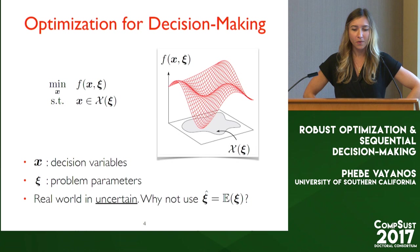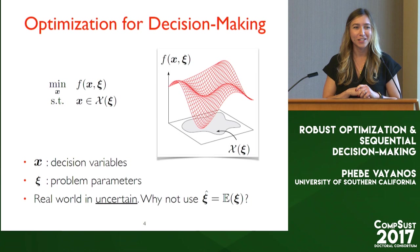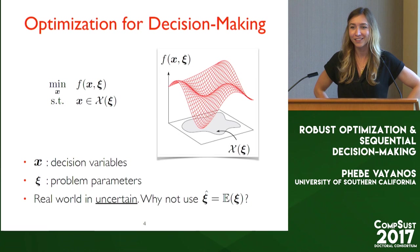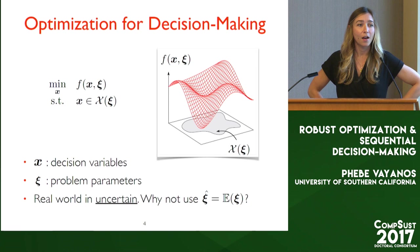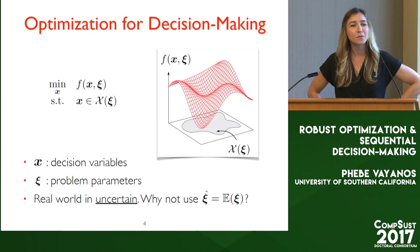What I want to argue in one slide is that optimization is the right way to address this problem, and then I'm going to address the robust component. Why is optimization the right way, in my view? In short, it enables us to model very complicated real-world decision-making problems in a compact fashion, and it oftentimes enables us to solve those problems and get optimal or near-optimal decisions quite fast.